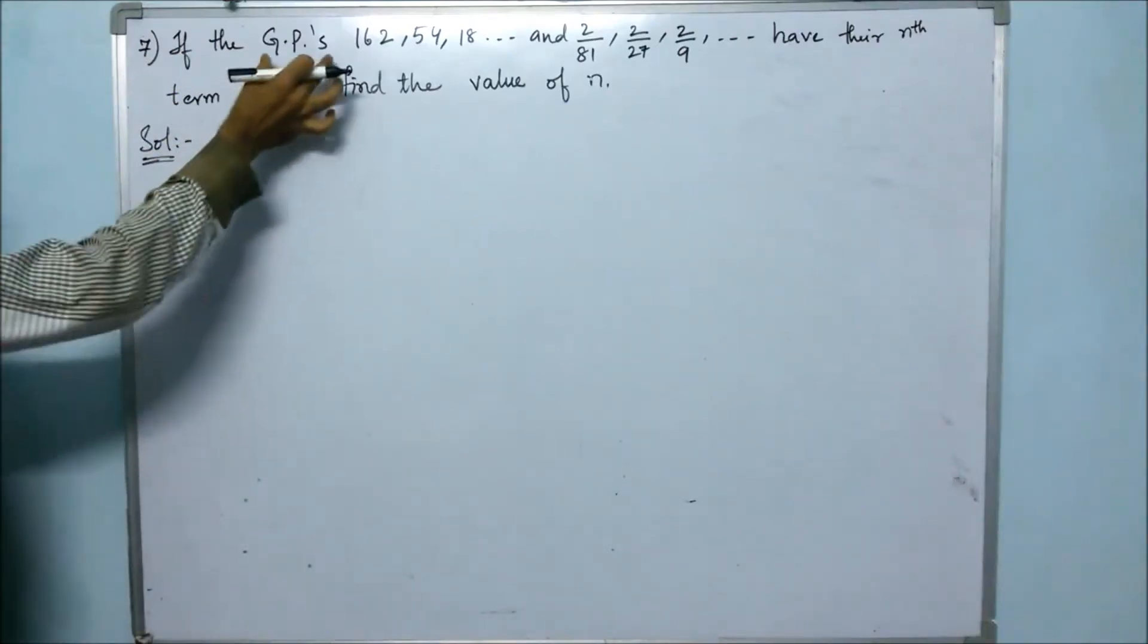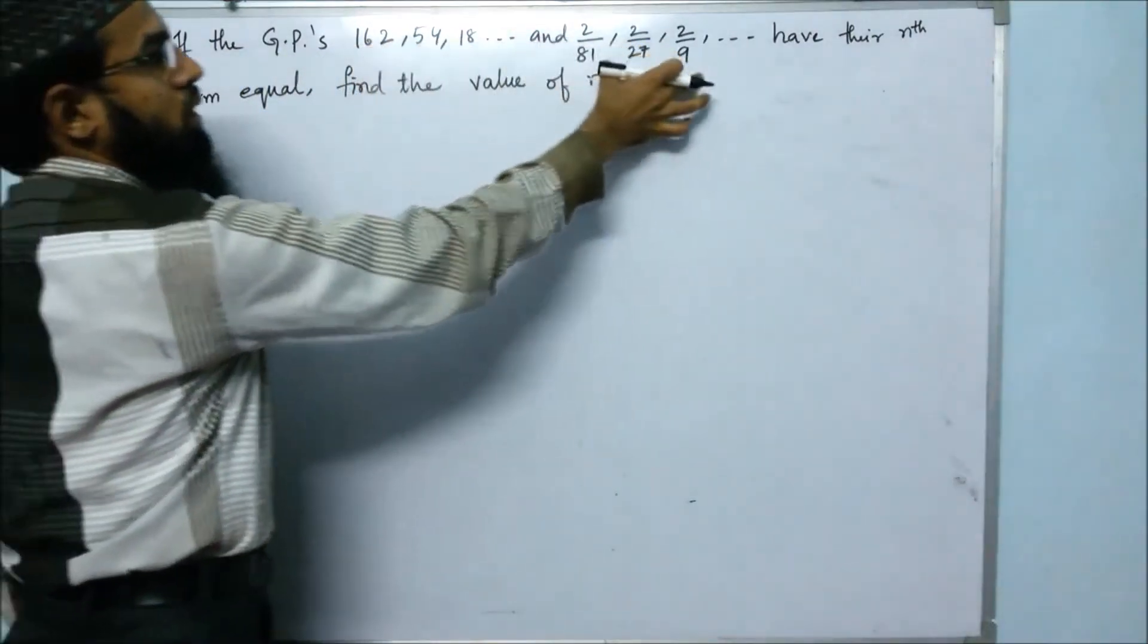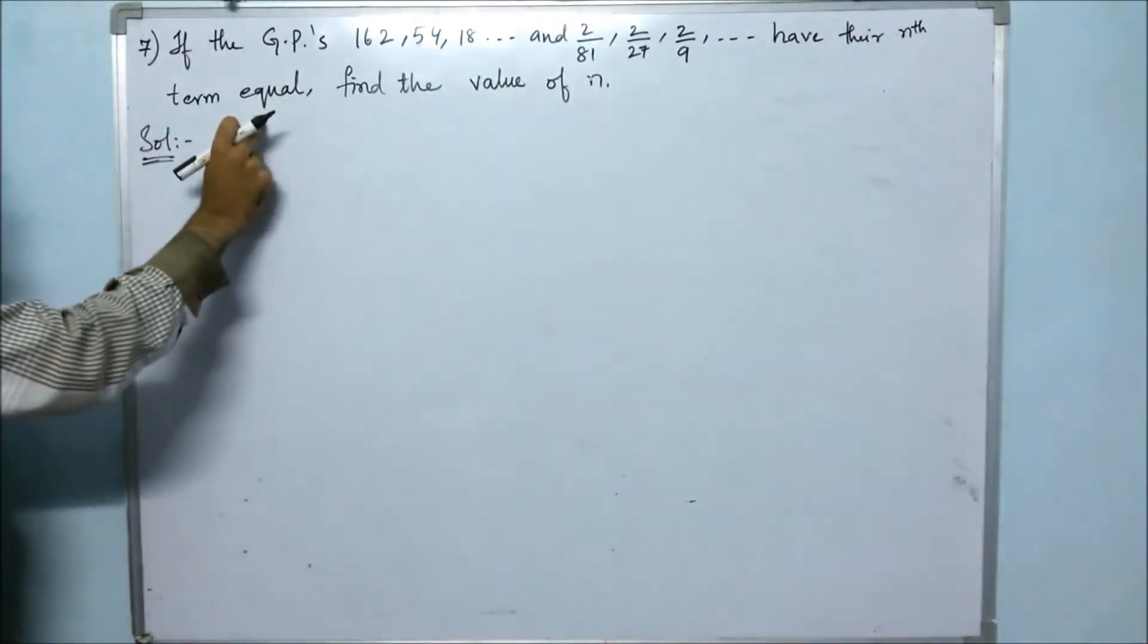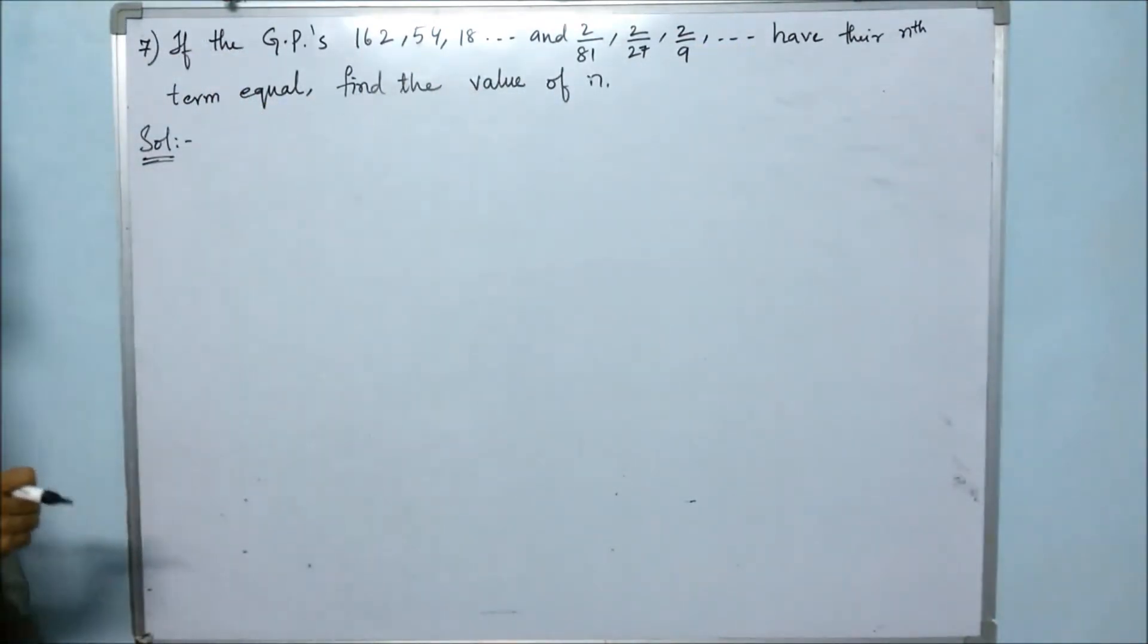This is the seventh problem. Given two GPs whose nth terms are equal, find the value of n.